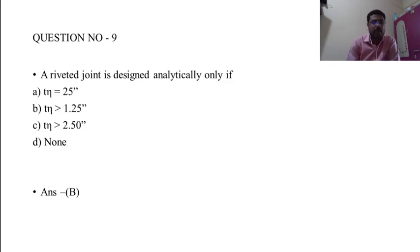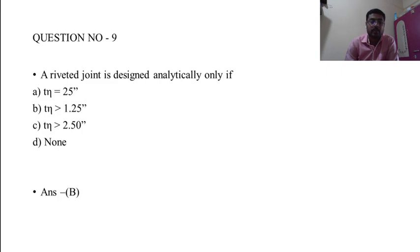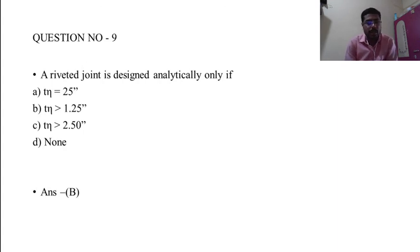Question 9: A riveted joint is designed analytically only if — A) t × η = 25, B) t × η > 1.25, C) t × η < 2.50, D) none of the above. The correct answer is B: thickness × efficiency is greater than 1.25.